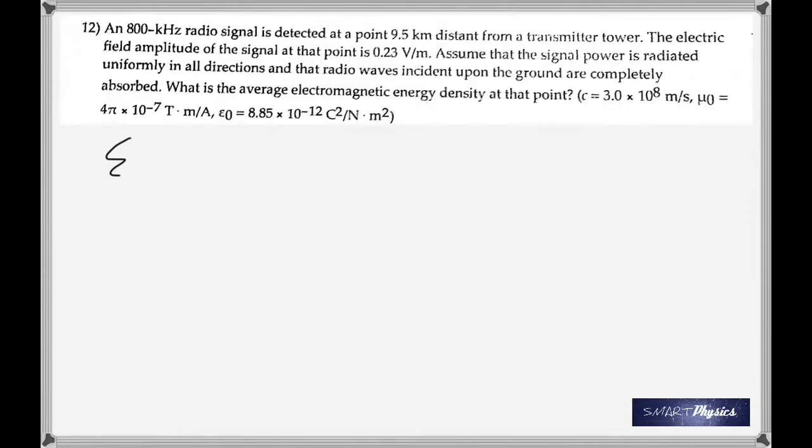If you read the question, it talks about an 800 kilohertz radio signal detected at a point 9.5 kilometers distant from a transmitter tower. The electric field amplitude of the signal at that point is 0.23 volt per meter. Assume that the signal power is radiated uniformly in all directions and that the radio waves incident upon the ground are completely absorbed. What is the average electromagnetic energy density at that point?